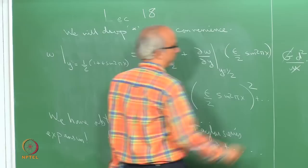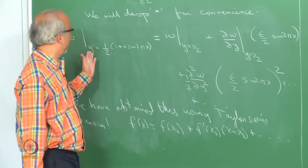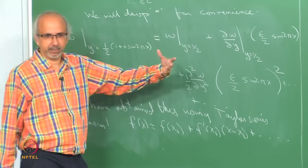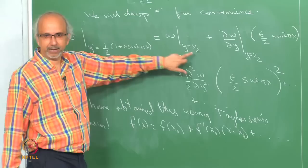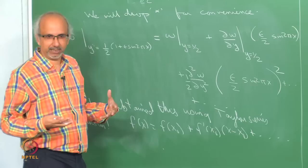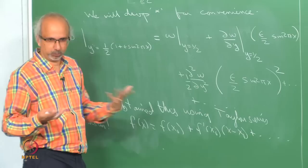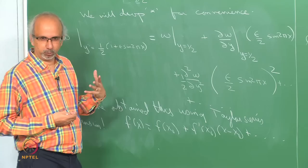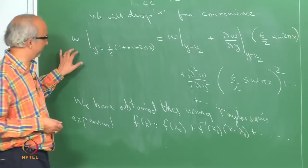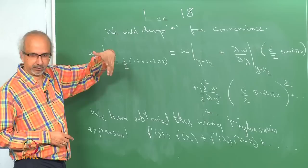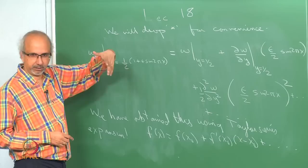What I have done is used a Taylor series expansion. This transformation has allowed me to evaluate w at y = 1/2, which is something I am comfortable with. If you tell me y equals 1/2, I know how to plug in the boundary conditions and find the arbitrary constants of integration. So I have taken w evaluated on this wavy surface and, exploiting the fact that it is a small deviation from y = 1/2, performed a Taylor series expansion.